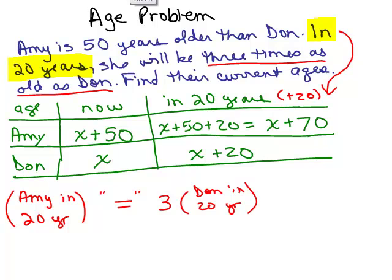So we look at the chart for the information. What is Amy's age in 20 years? We're looking right here, that's how old she is in 20 years, X plus 70. Now we can use a real equal sign. That's the same thing as three times whatever Don is in 20 years. Let's look at the chart, in 20 years Don is X plus 20. And that is our equation.